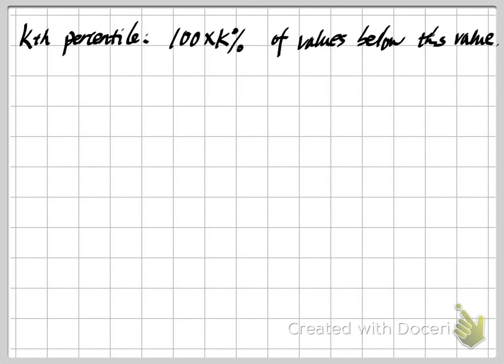That's all the material for this video — the stem and leaf plot, how to draw it by hand, its advantages and disadvantages, and two important terminology concepts: quantiles and percentiles. In the next video, I will start talking about one more plot for numerical data. Please subscribe to this channel and see you in the next video.